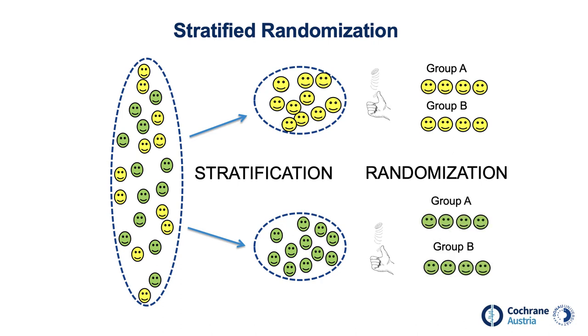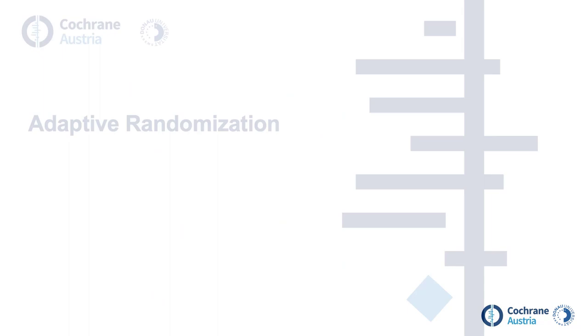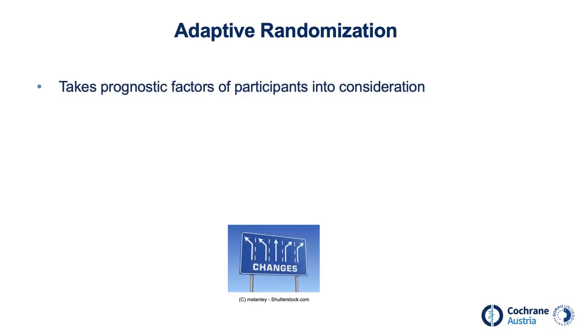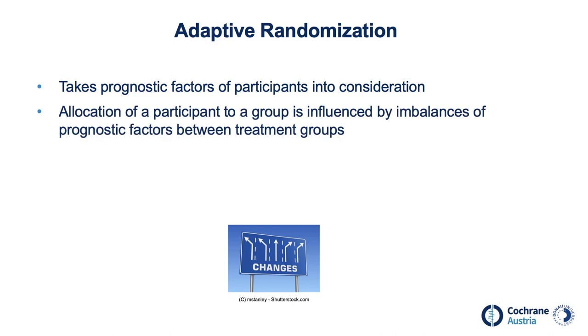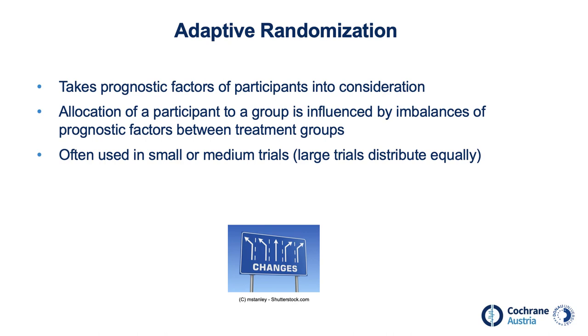There are also other forms of randomization that attempt to balance prognostic factors, summarized under the family of adaptive randomization. Adaptive randomization has the same goal as stratified randomization but takes a different approach — it takes prognostic factors such as disease severity or age into consideration before allocating participants to a treatment group, and the allocation is influenced by existing imbalances of prognostic factors between treatment groups. Adaptive randomization is often used in small or medium trials. Two examples are covariate adaptive randomization and minimization.